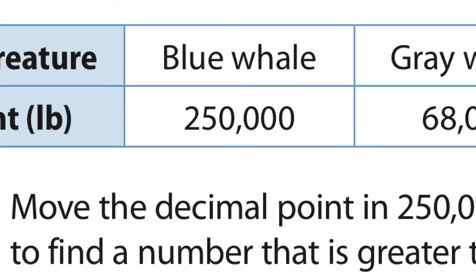Could I put the decimal here? No, that's 2,500 — way more than 10. Could I put it here? That's 25, still way more than 10. If I put the decimal here, that's 0.25 — that's smaller than one. I need it between one and 10, so the only place to put it is right there: 2.5. That's step one in creating a number in scientific notation.